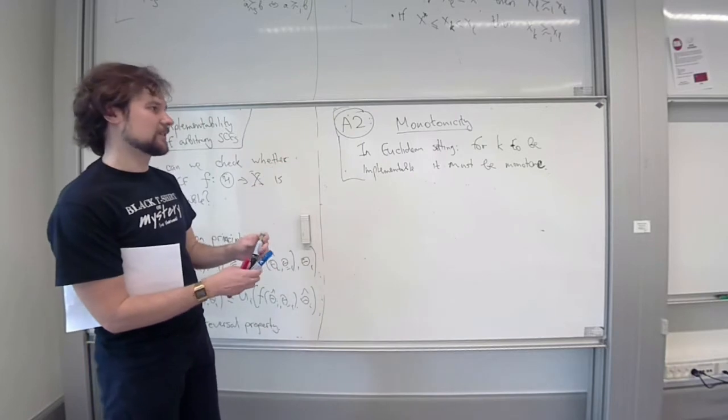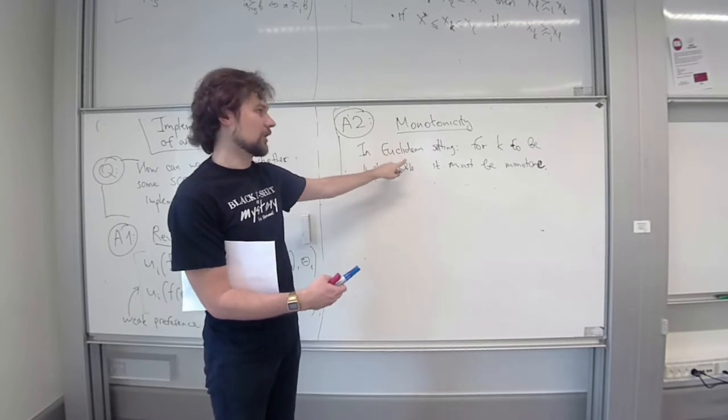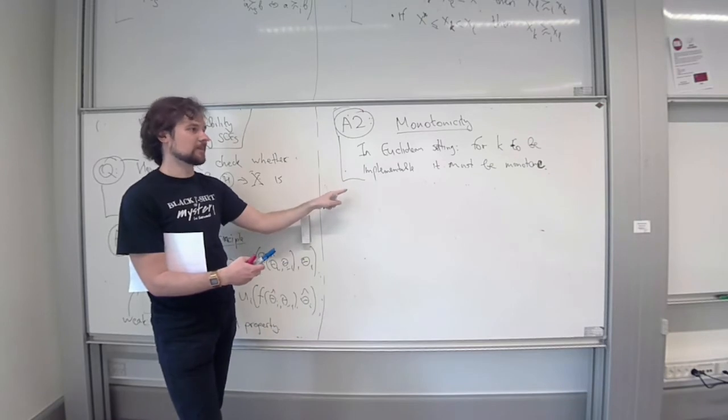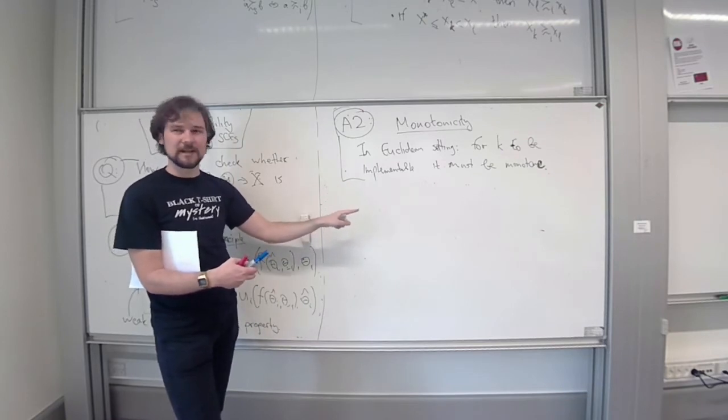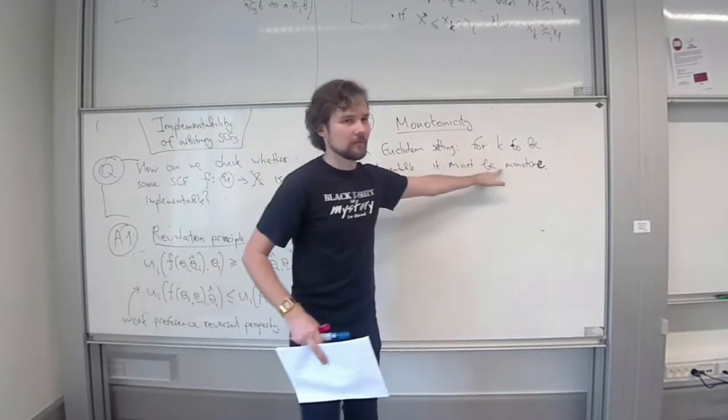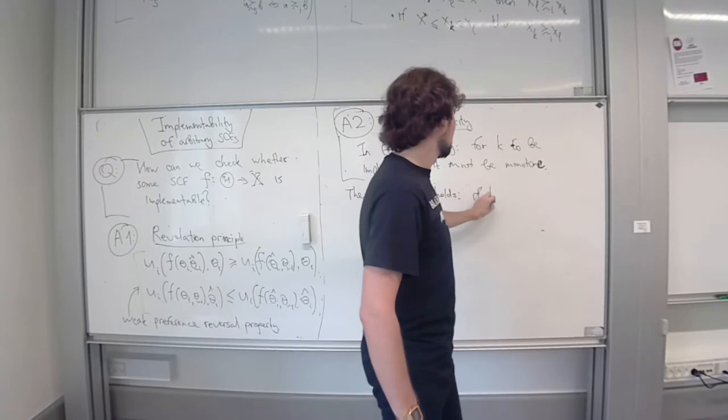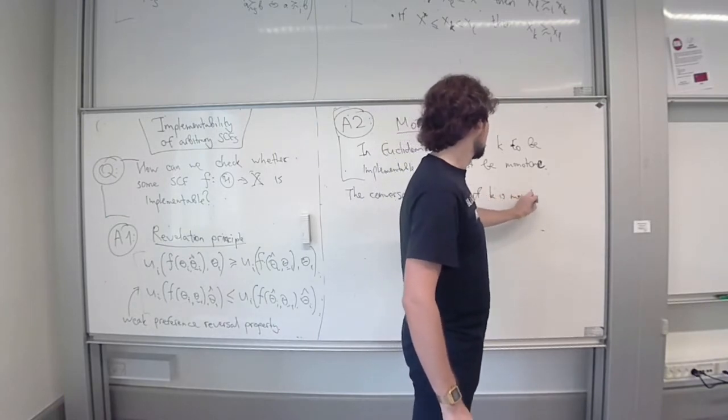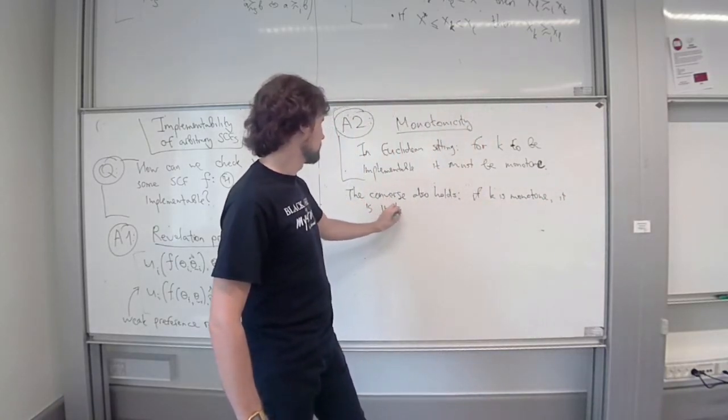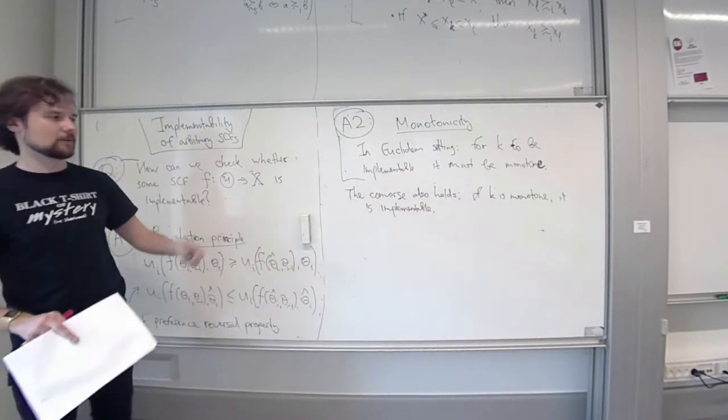We just did this in one direction: if K is implementable, it is monotone. But turns out it is a sharp characterization, so you can have it the other way too. If K is monotone in the right direction, then you can find transfers which support it. In the end, K is monotone if and only if it is implementable.